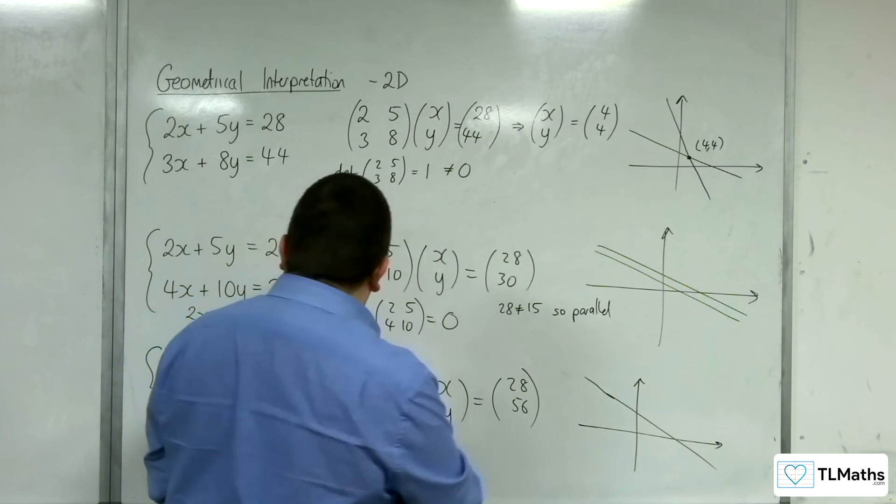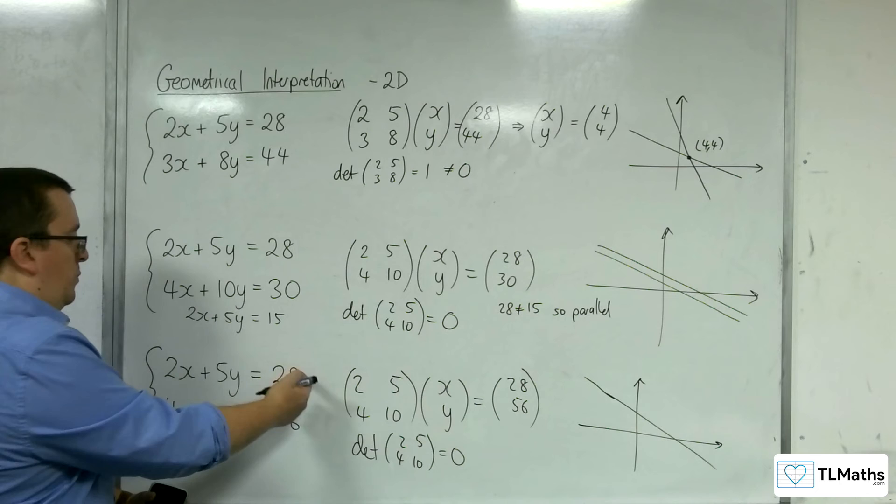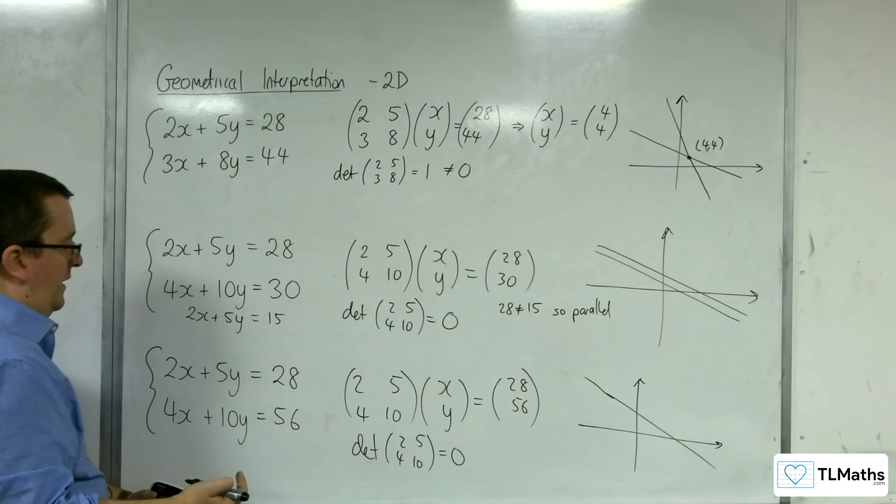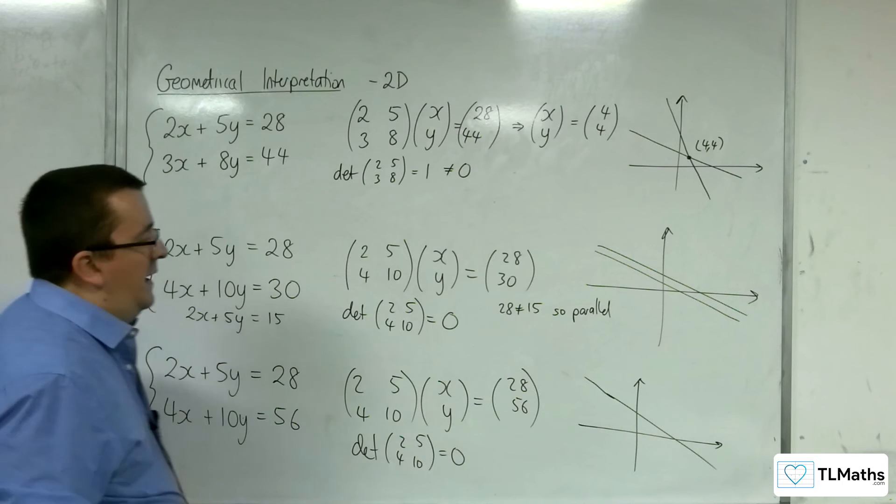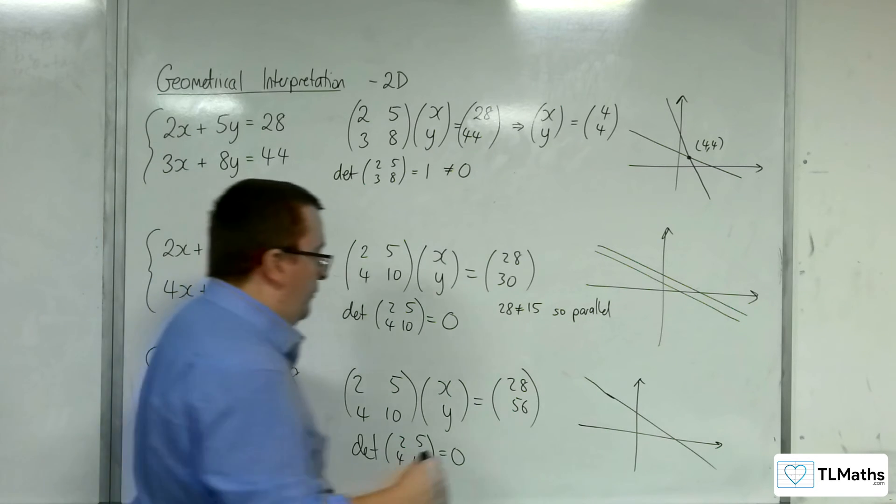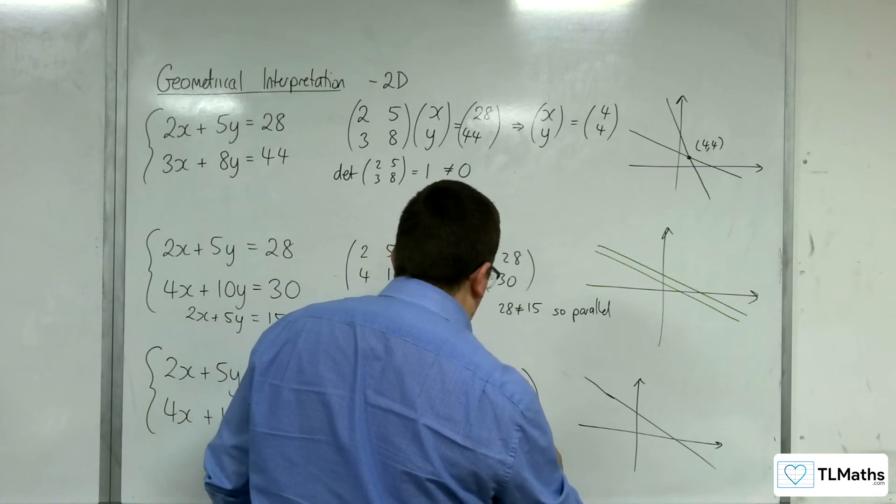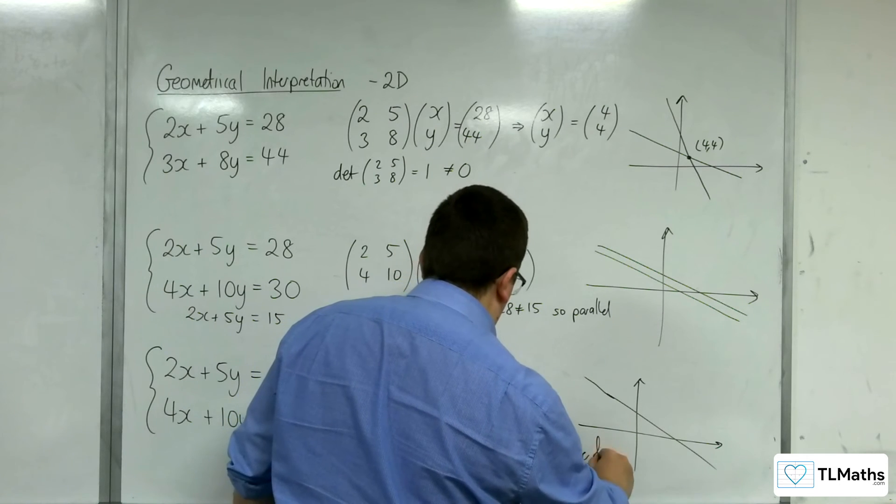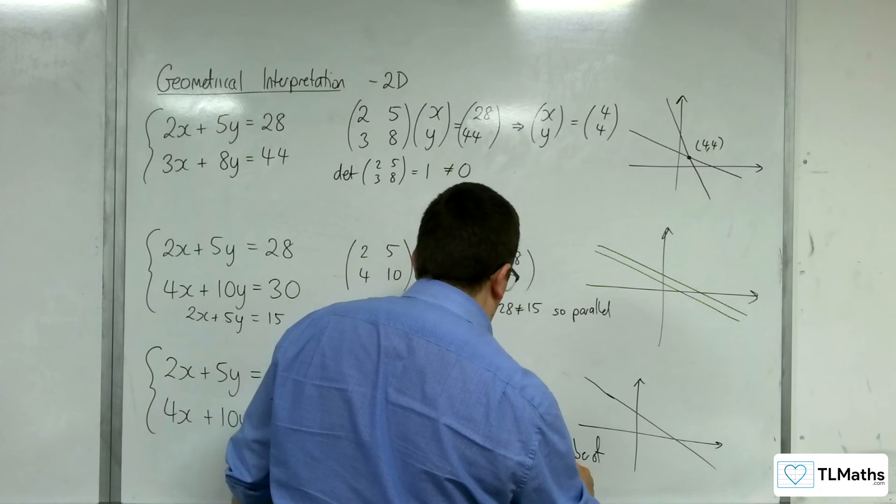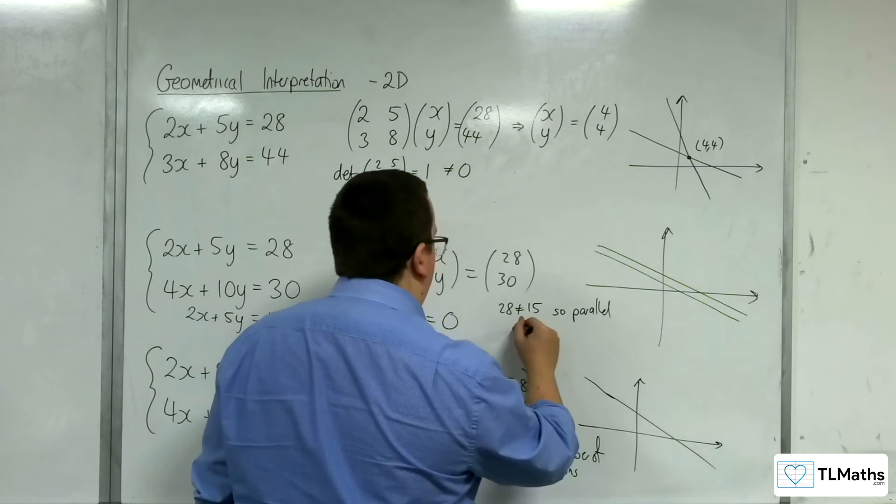I would get precisely this one. So the two lines are the same. They are overlapping one another. Okay. So because 28 is half the 56, well, this equation is half of this one, there is an infinite number of solutions.